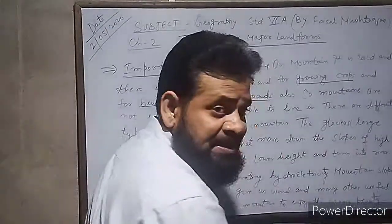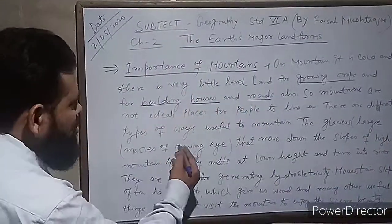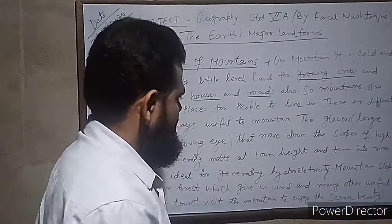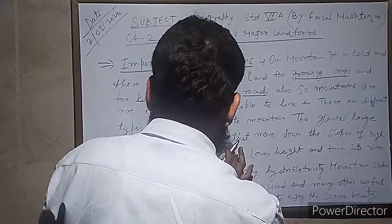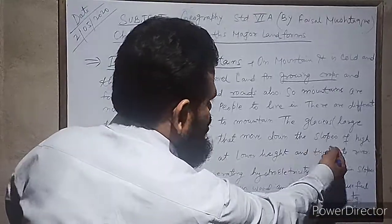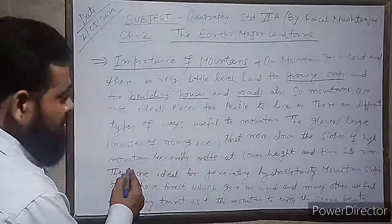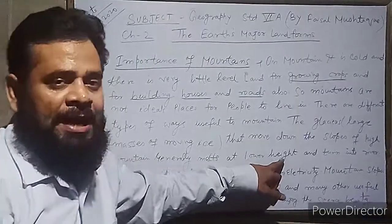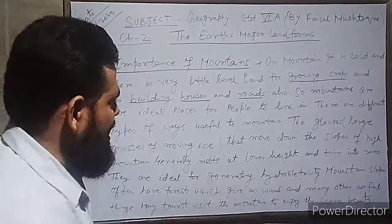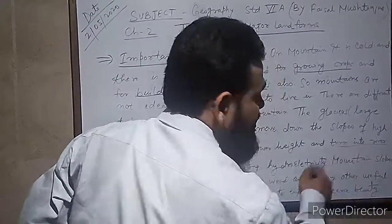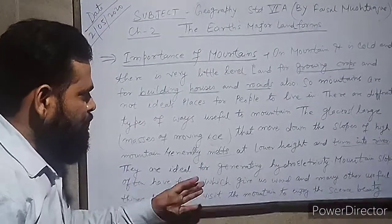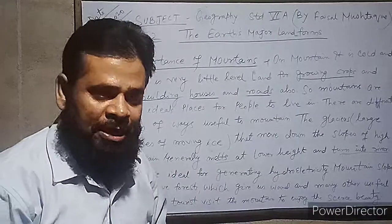Glaciers — large masses of moving ice — move down the slopes of high mountains, generally melt at lower heights, and turn into rivers. They are ideal for generating hydroelectricity.